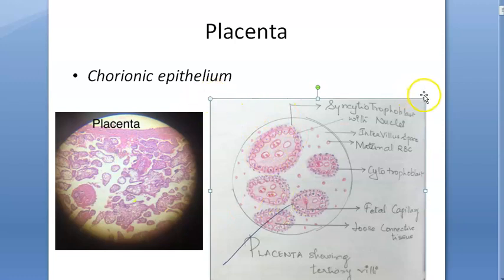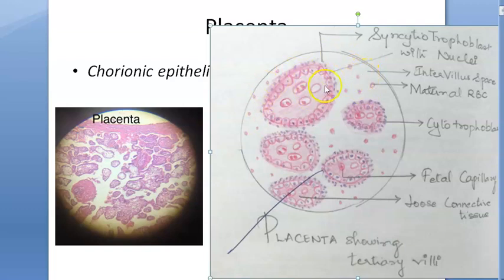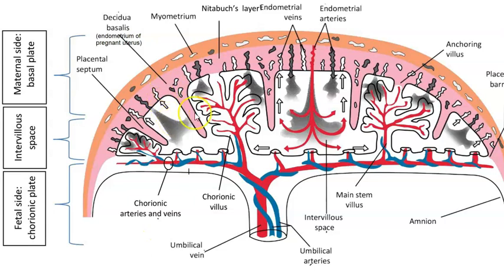The villi have a syncytiotrophoblast on the outside, which has only the nucleus, and inside you have the cytotrophoblast. Around the villi there are a lot of maternal red blood cells. These villi pick up nutrition from the mother's blood and deliver it to the fetus. You can see all these villi clearly.